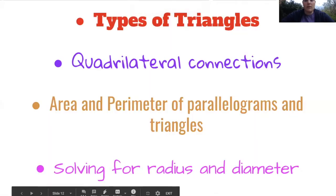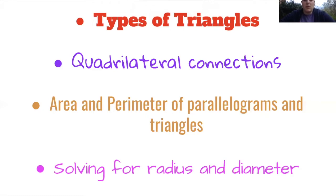We have covered these four different topics in this unit: types of triangles, quadrilateral connections, area and perimeter of parallelograms and triangles, and then solving radius and diameter of circles. We're going to review these today.